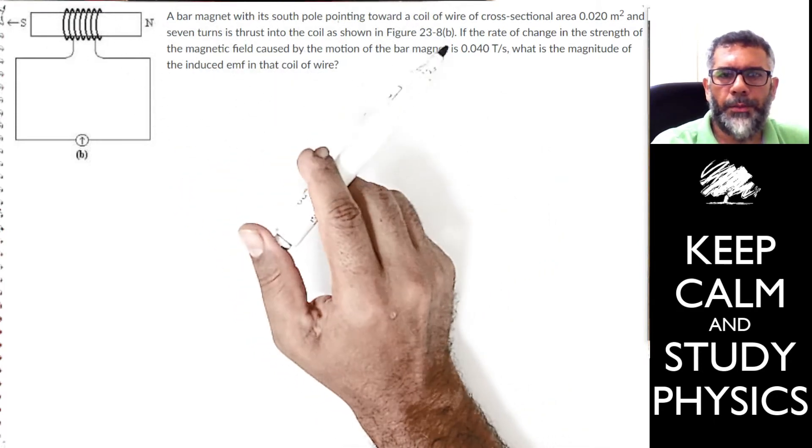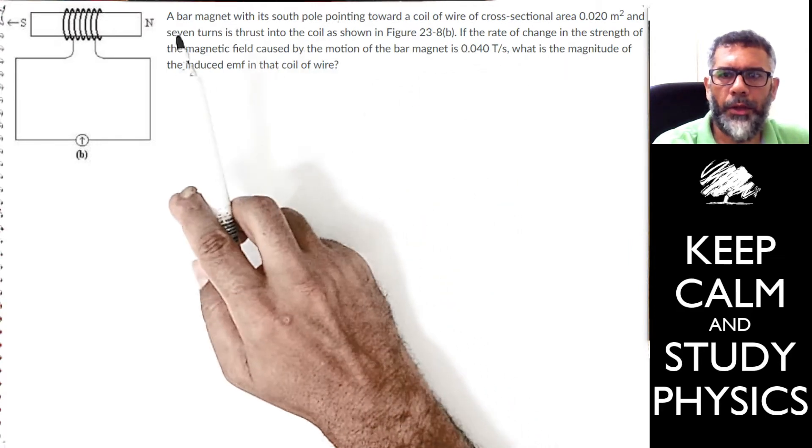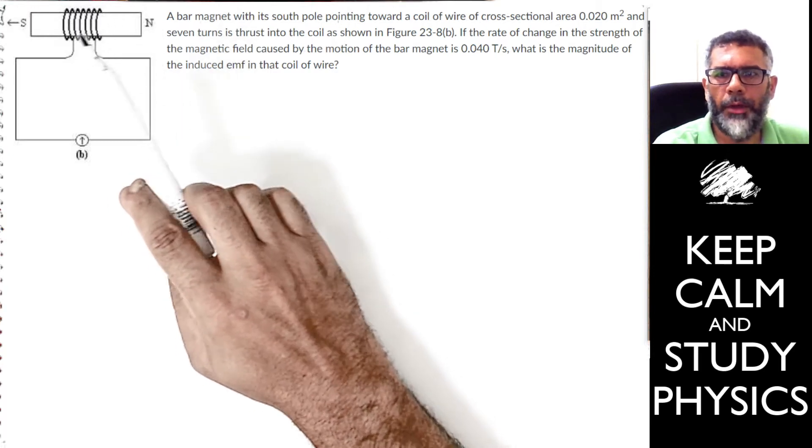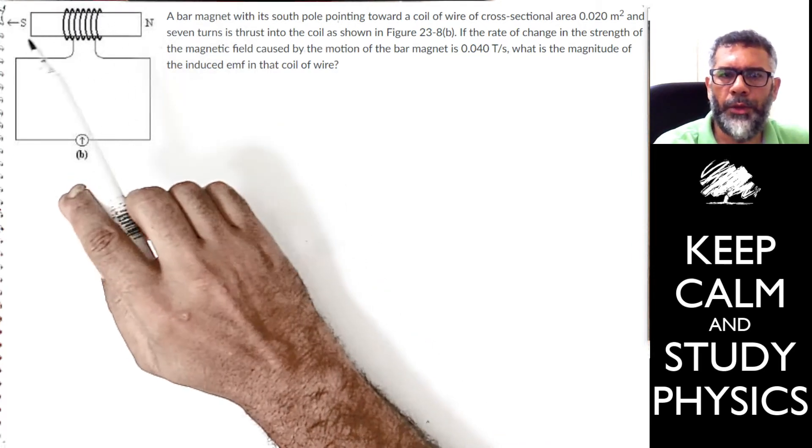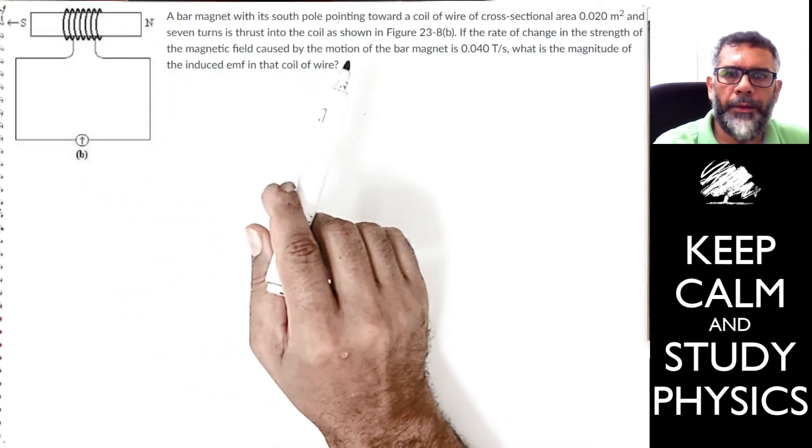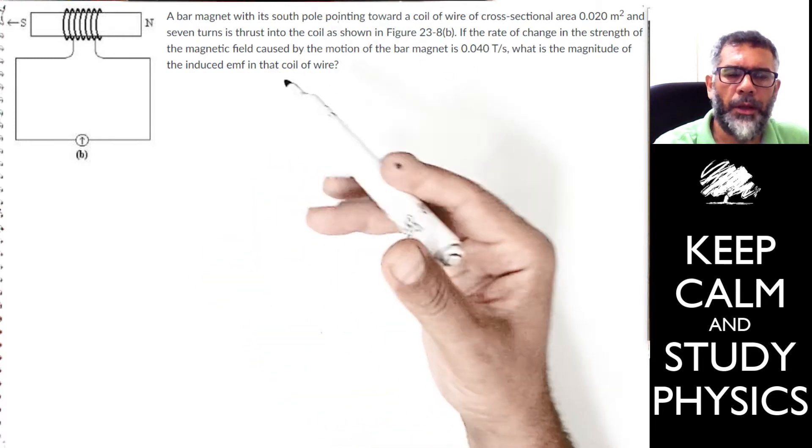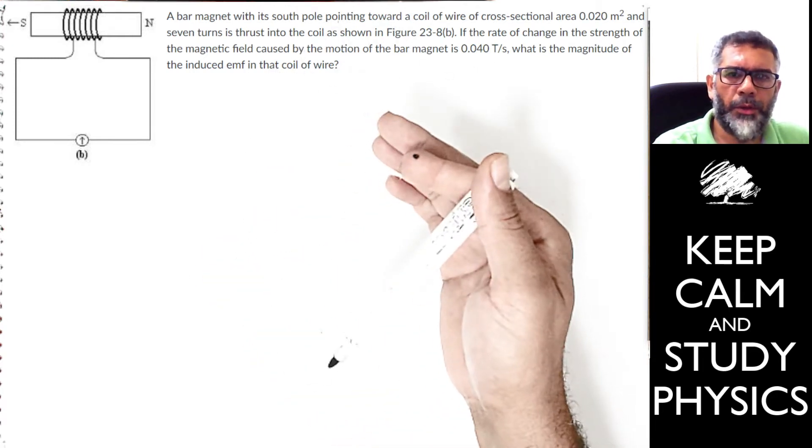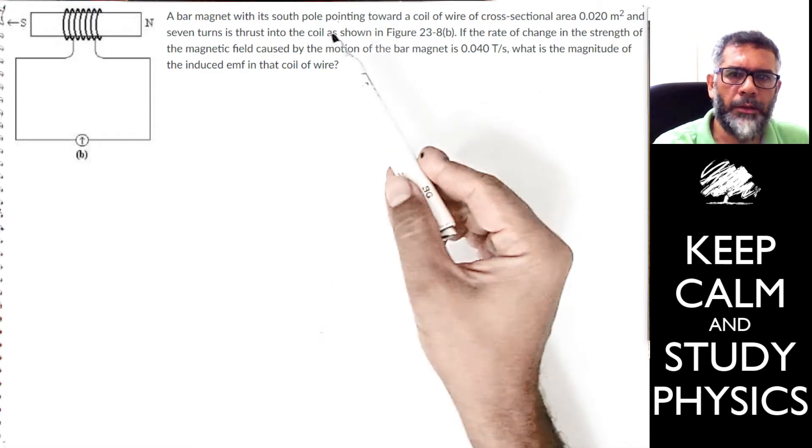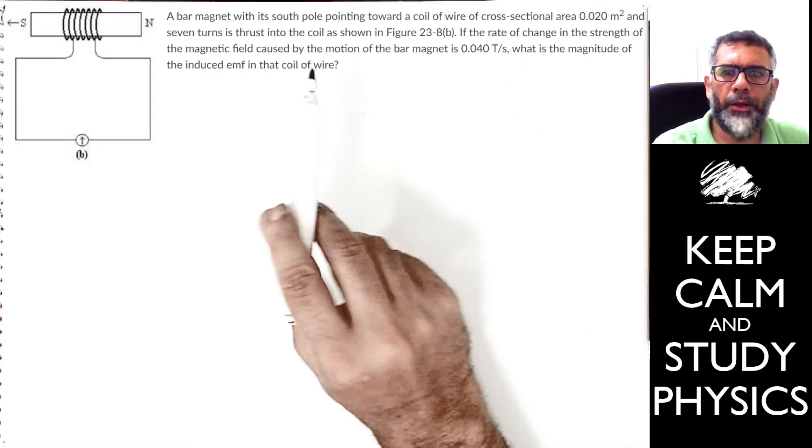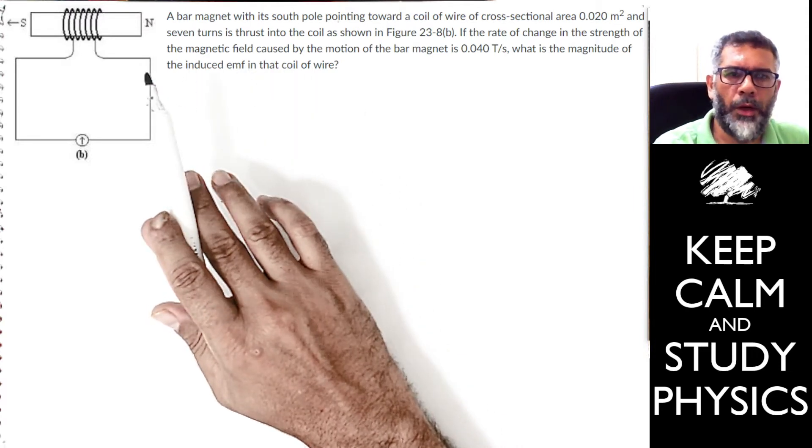What it says in the problem is that if the rate of change in the strength of the magnetic field caused by the motion of the bar magnet, the motion shows that it is moving to the left, if this change is 0.04 tesla per second, that means the change in the magnetic field occurs of 0.04 tesla in one second. What is the magnitude of the induced electromotive force in that coil of wire?